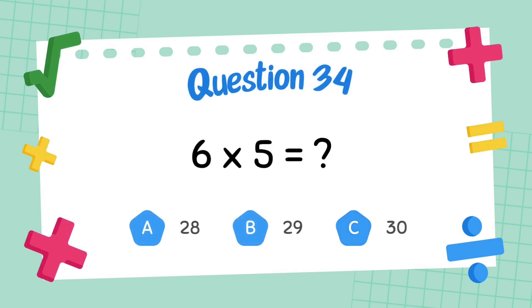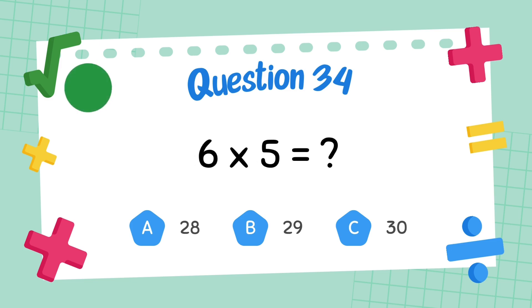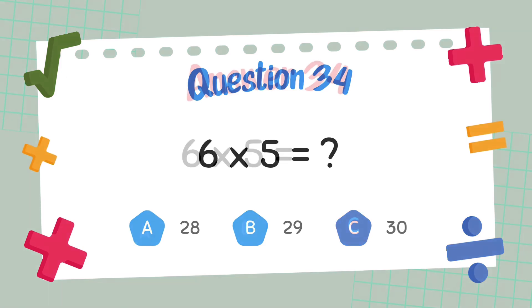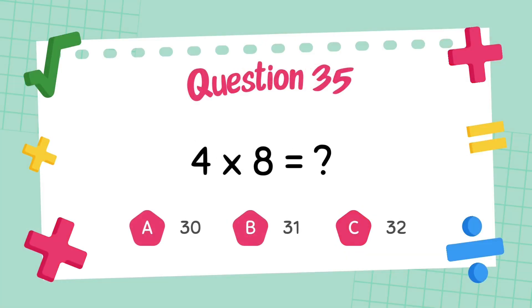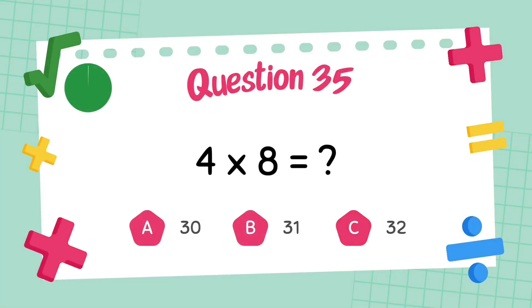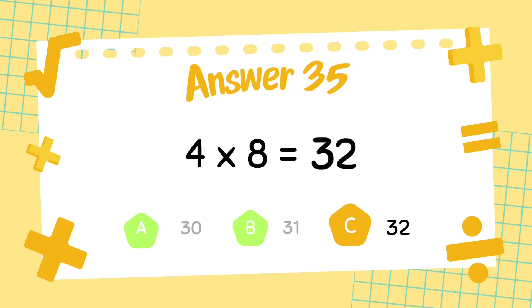What is 6 multiply 5? What is 5 multiply 5? The answer is 30. What is 4 multiply 8? The answer is 32.